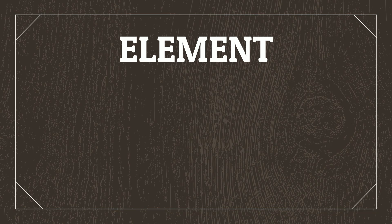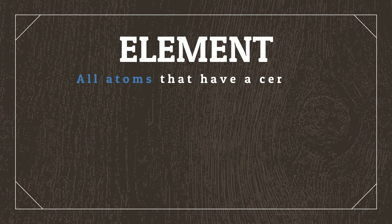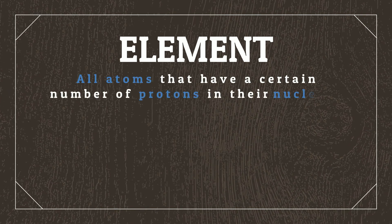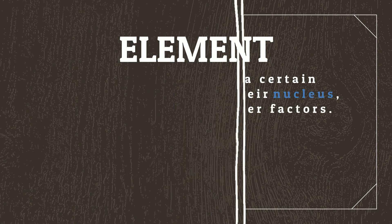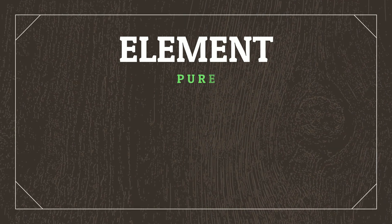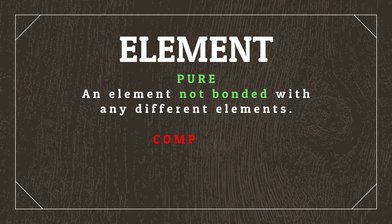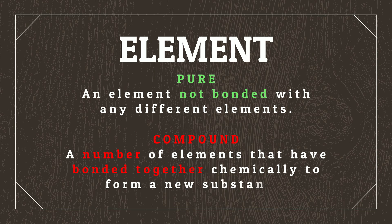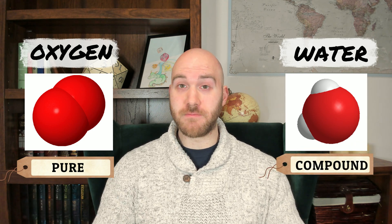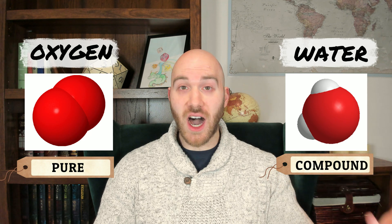An element refers to all atoms that have a certain number of protons in their nucleus, regardless of their other factors. An element may be pure, which refers to an element not bonded with any different elements, or a compound, which refers to a number of elements that have bonded together chemically to form a new substance. An example of both respectively are oxygen and water — oxygen is a pure element, while water is a combination of an oxygen atom bonded with two hydrogen atoms.